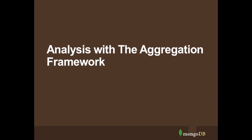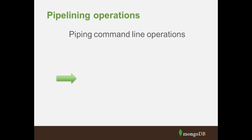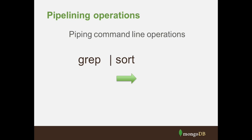MongoDB provides an application framework which uses fundamentally a pipeline type operation. We're probably familiar with those — for example, Unix or MS Windows provides pipe operations. An example would be Unix grep, which searches for text and files. We can pipe that using an ASCII pipe character into a sort operation, which will sort the lines coming out of grep. And we can further pipe that into a unique operation, which will remove recurrent lines. That's at the operating system level.